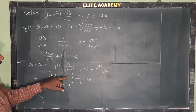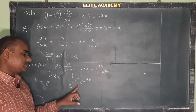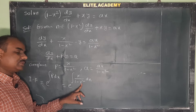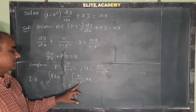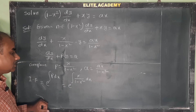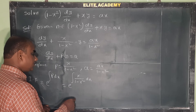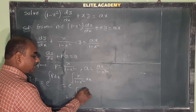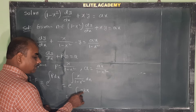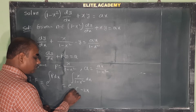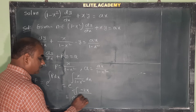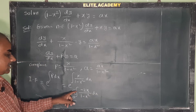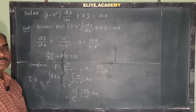Let us see how to integrate this function. The derivative of the denominator (1 - x²) is -2x. So we adjust the numerator: we write the integral as (-1/2) ∫ (-2x)/(1 - x²) dx. This integral is now in the form ∫ f'(x)/f(x) dx.